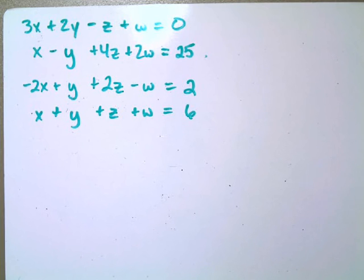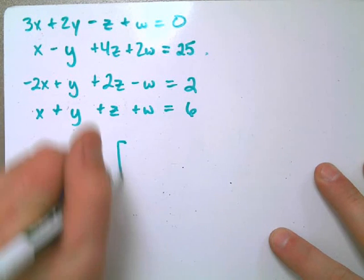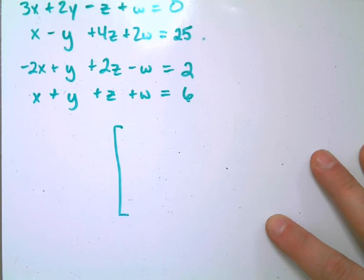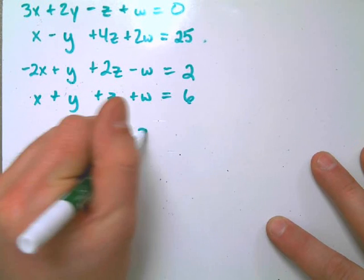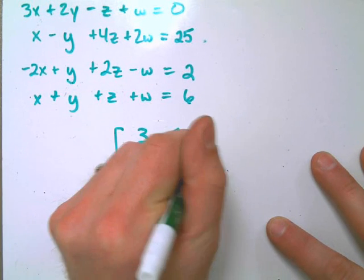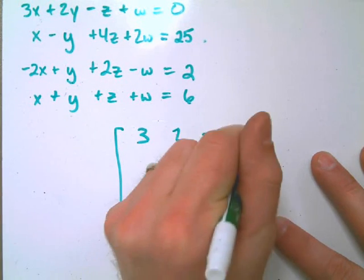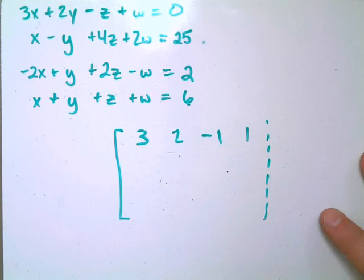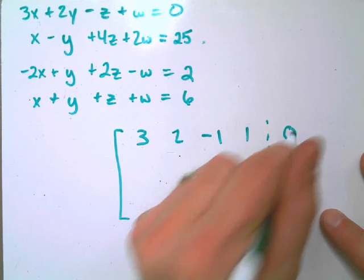The first step is we need to be able to write an augmented matrix for this system of equations. That is to say that we need to take this information, we need to transfer it into an augmented matrix, which can be done by just writing the coefficients. I have three x's, two y's, negative one z's, one w. I'm going to put a dotted line here. That's kind of for my equal sign. My constants go on the right, that would be zero.